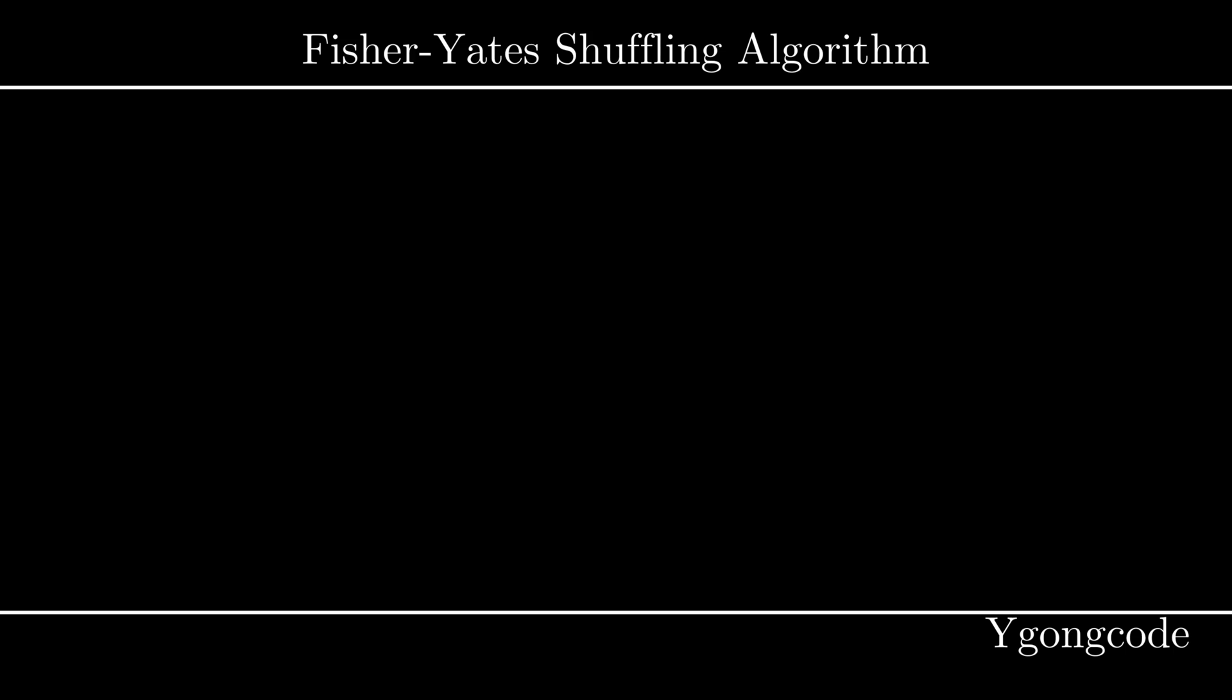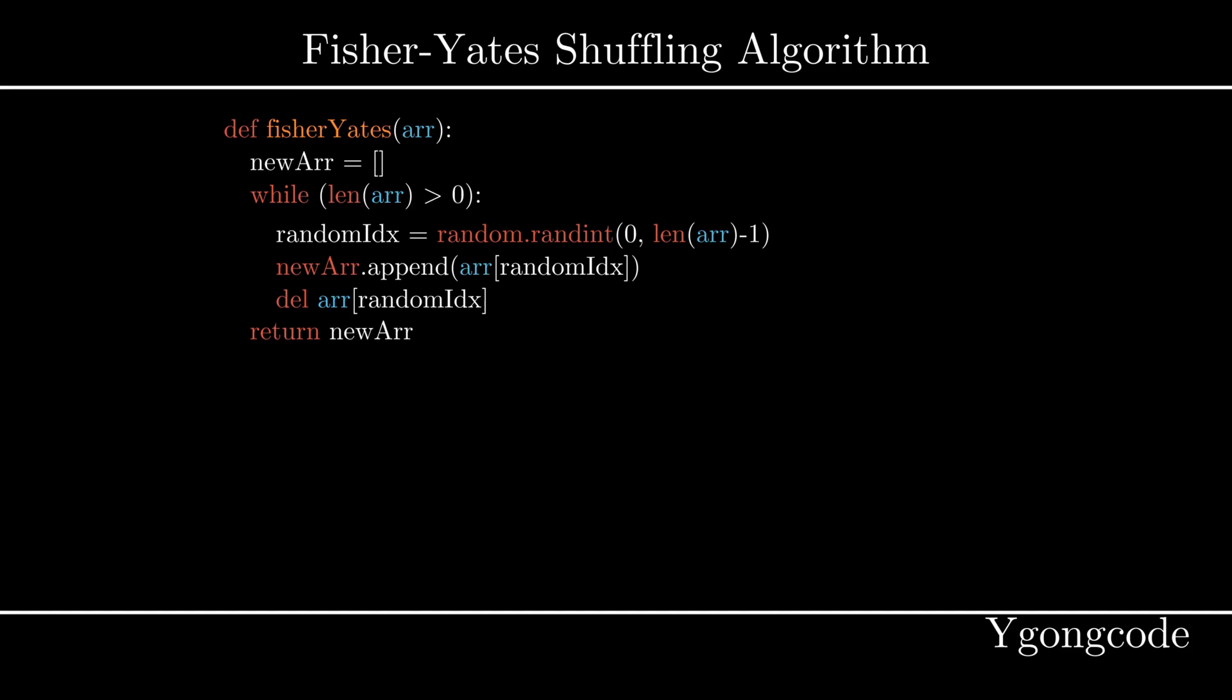In 1938, Donald Fisher and Frank Yates proposed the following Fisher-Yates algorithm. Given an array of elements, this algorithm outputs a new array that is randomly shuffled. Let's visualize this on the following input array.